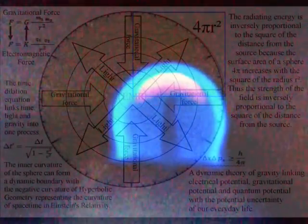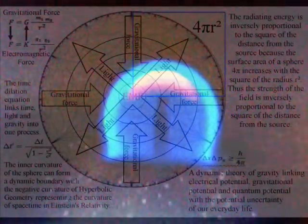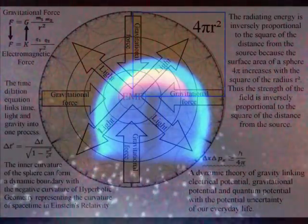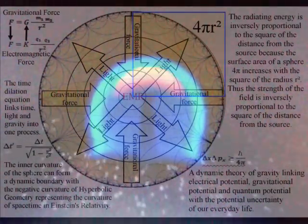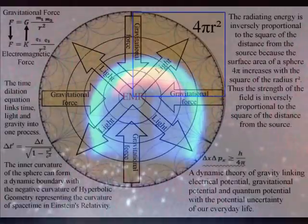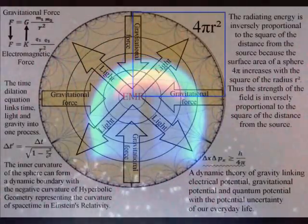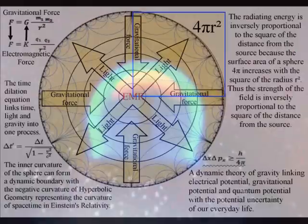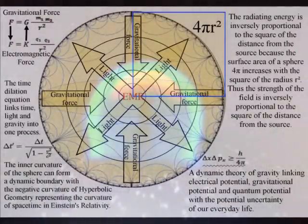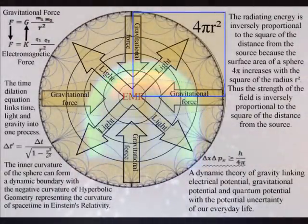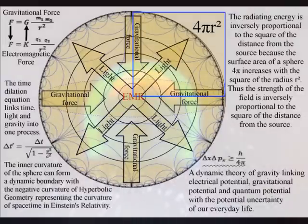In the frame of reference of the candle flame the sphere is inverse with the interior of the sphere radiating out in all directions. The strength of radiating energy is inversely proportional to the square of the distance from the source because the surface area of a sphere increases with the square of the radius. Thus the strength of the field is inversely proportional to the square of the distance from the source.